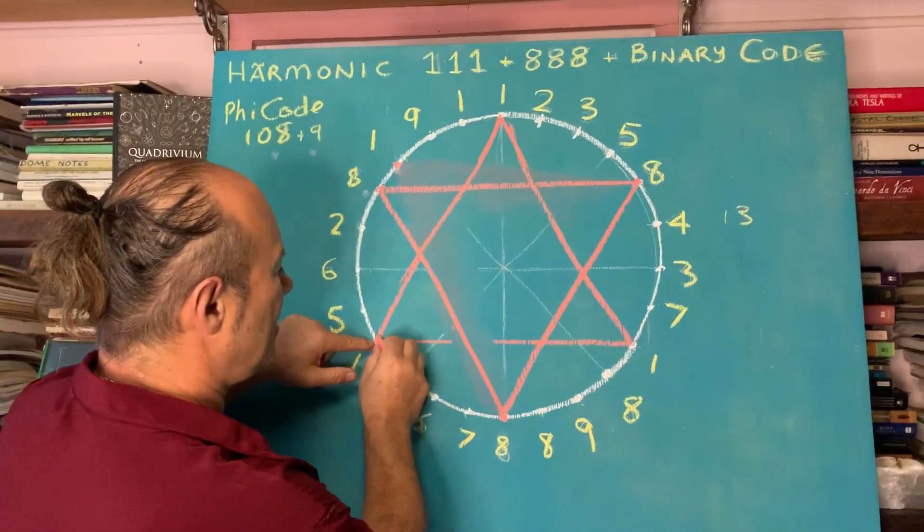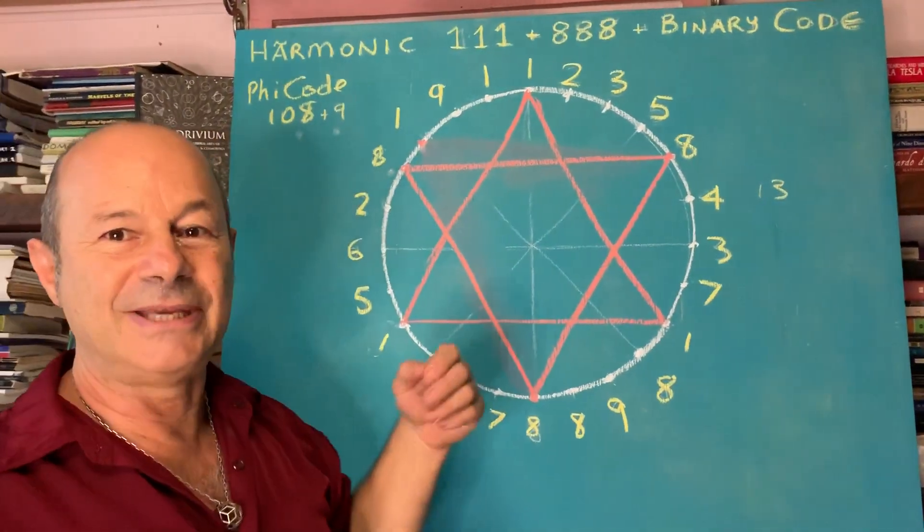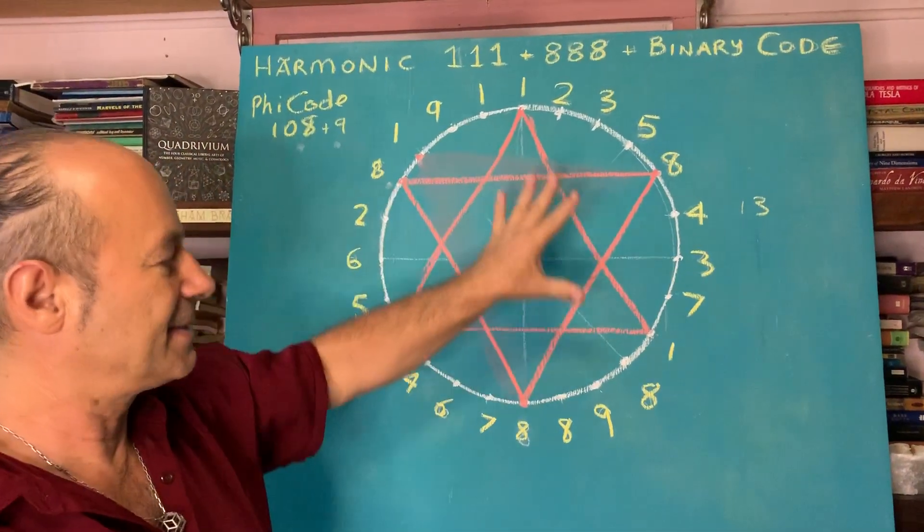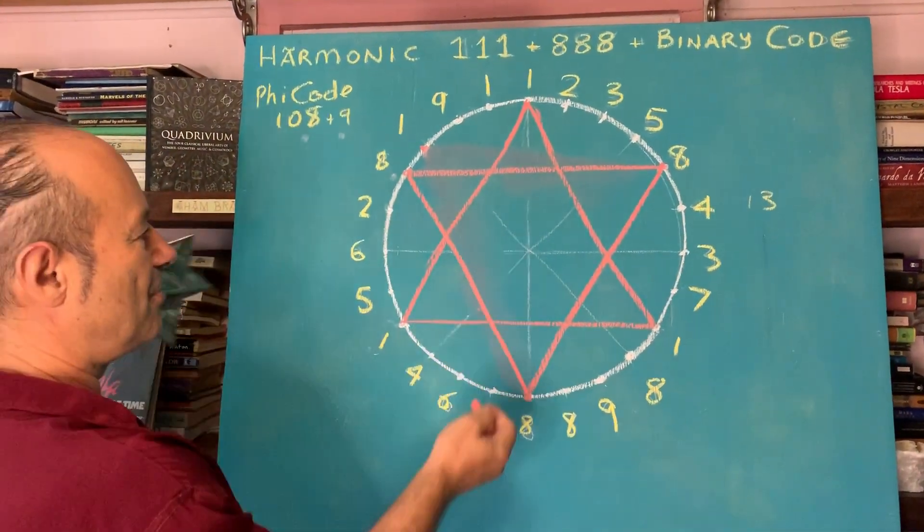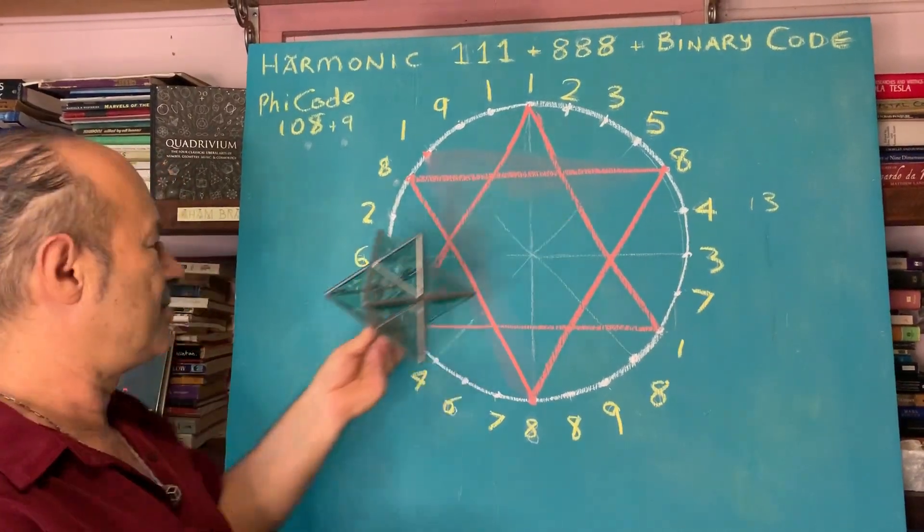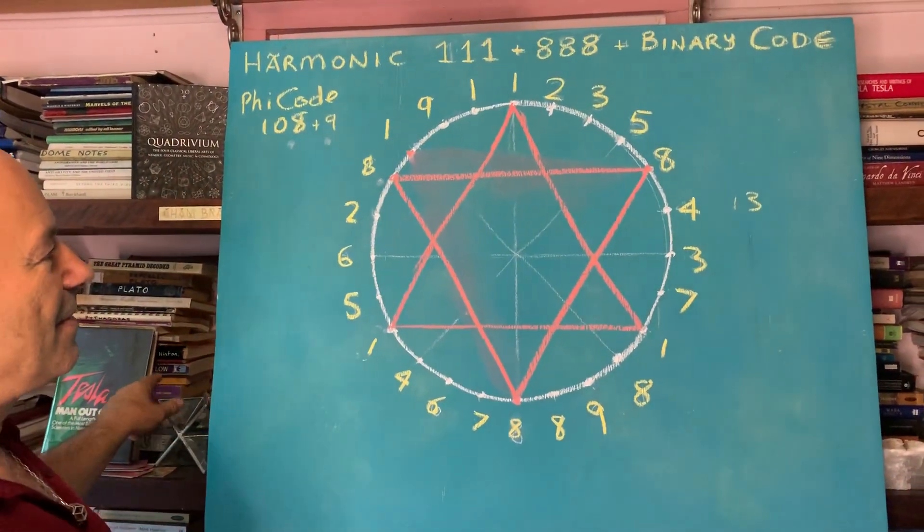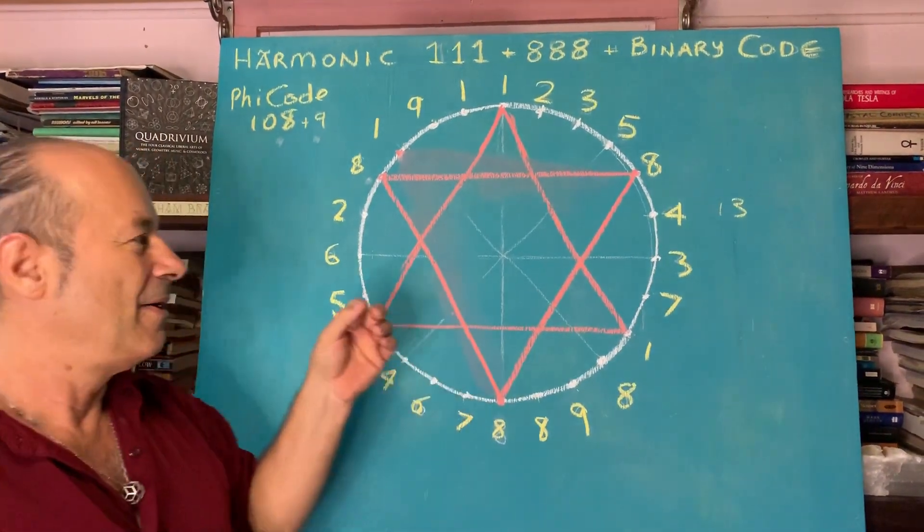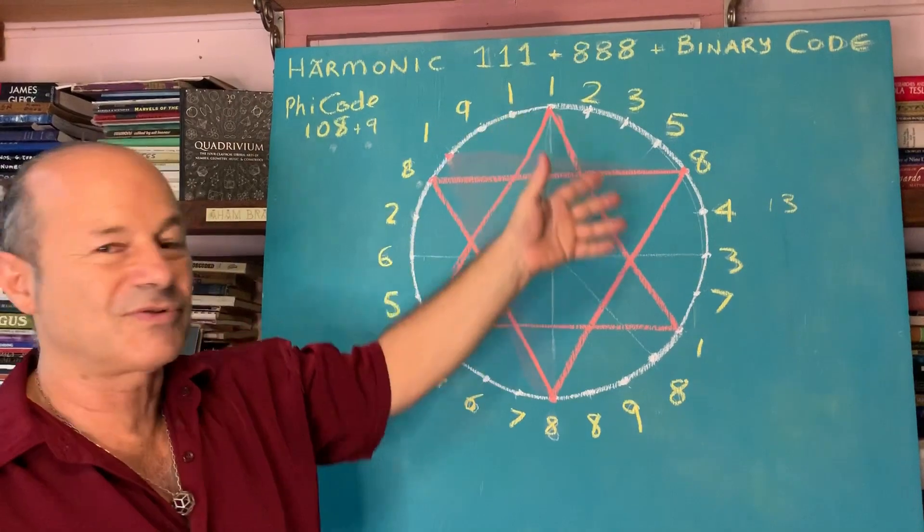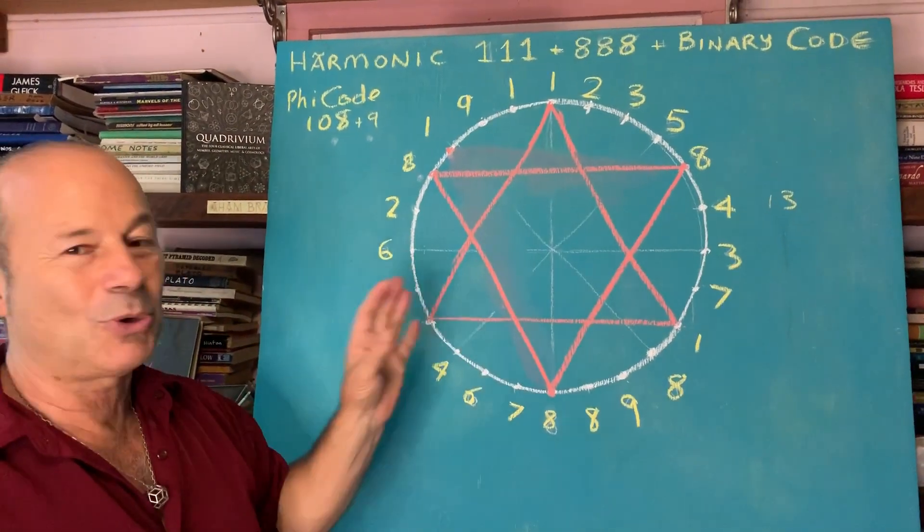Now we've got a perfect star of David, two interpenetrating or interdigitating star triangles. The three-dimensional form of this is the star tetrahedron, which is two tetrahedron. So we can stop there and say, wow, we found symmetry within the wheel of 24.